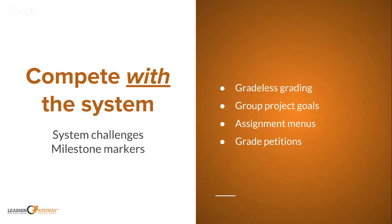Group project goals are one way to shift focus from the individual to the group. Assignment menus are another example. Grade petitions — where you put the onus on the student to petition or present why they should earn the grade they think they deserve — is another approach. This is done with criteria; we have something called vertical rubrics to support this model.